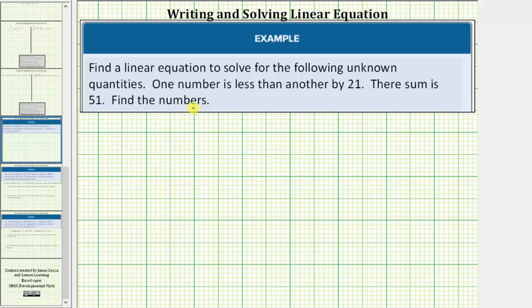We know we are adding two numbers and the result is fifty-one. And one number is twenty-one less than the other. Let's begin by writing variable expressions for both numbers.